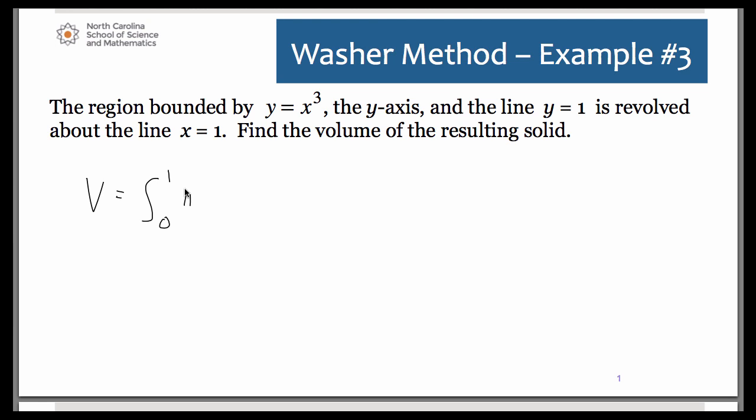And π. Then remember, we need big R squared. So big R, remember, was 1, minus little r was 1 minus y to the one-third. And just don't forget to square that.